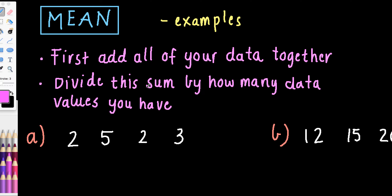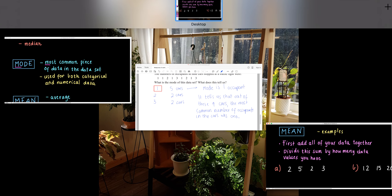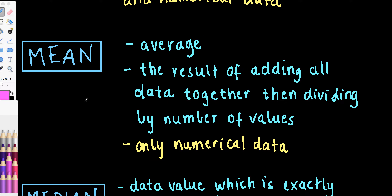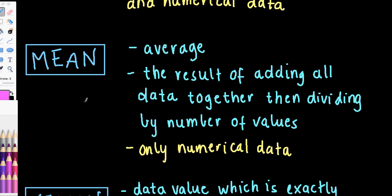Our next measure of centre is called the mean. One of the easiest things to say is that it's the average, because it is. Average is a term more commonly used — a typical person would have an understanding of this one because it's a very popular measure of centre. In terms of how we find it, it's the result of adding all of your data together and then dividing that sum by how many values you have in your data set. As a result of this, it's important to note this is only for numerical data, because we can't add together categories. We can't add together cold, moderate, and hot from categorical data.